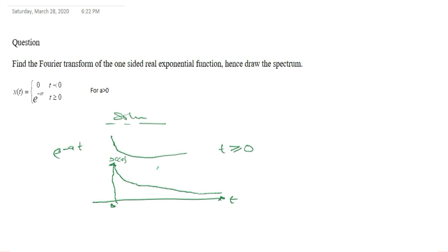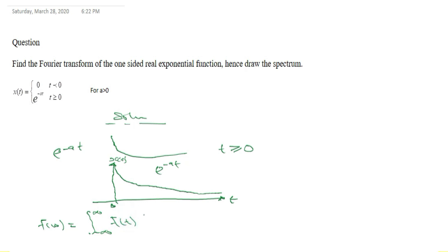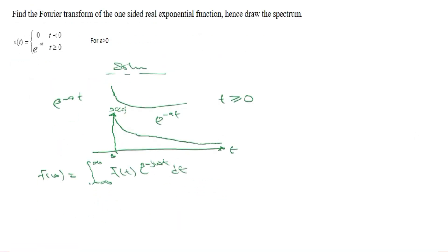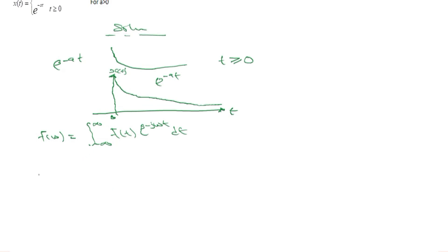This is exponential minus at — a dying exponential, as you can see. Now, recalling our formula for Fourier transform: F of omega is equal to the integral from minus infinity to infinity of f(t) times exponential minus j omega t, dt. Using this formula, since we are given x of t, we are going to have X of omega equal to...